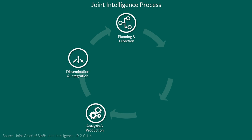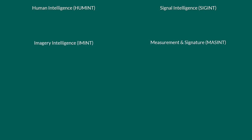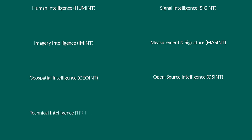The classical four branches of intelligence are human intelligence, signal intelligence, imagery intelligence, and measurement and signature intelligence. Furthermore, others also list geospatial intelligence, open source intelligence, technical intelligence, and counterintelligence.